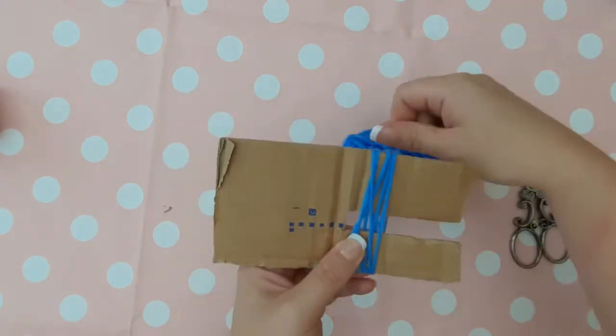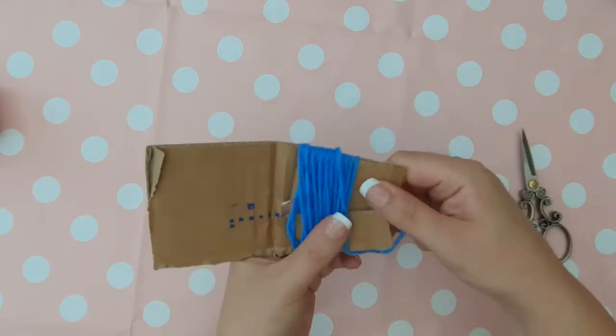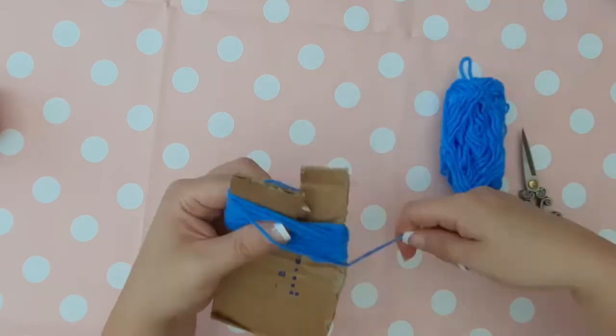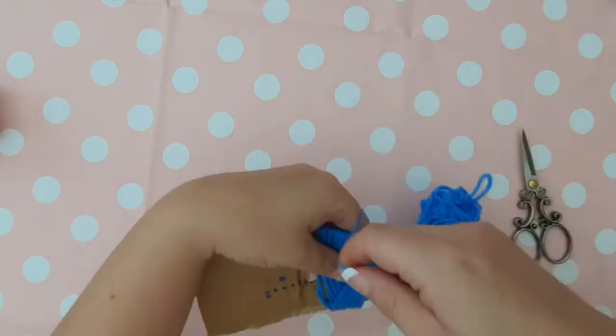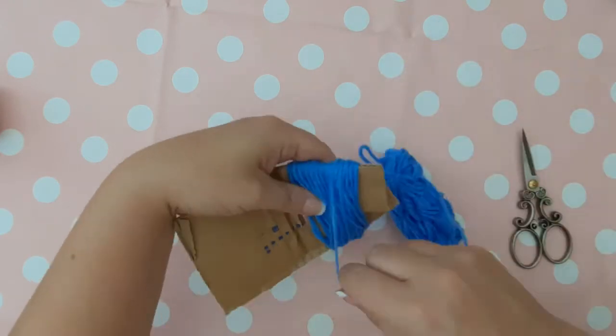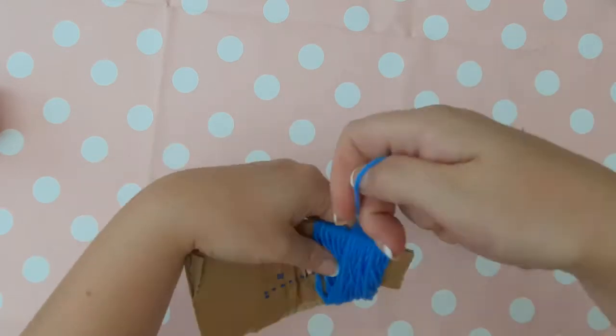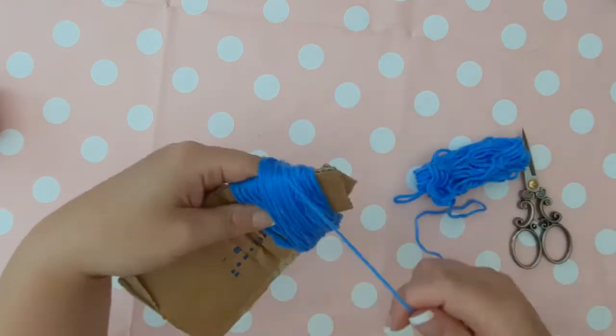Start wrapping your chosen wool around your pom pom maker. If you look where I've placed it on here, I've placed it about a centimeter away from the middle of that cardboard so it's got a little gap so you can thread your extra piece of wool through at the end. Just keep wrapping your wool around until you think that you have enough.